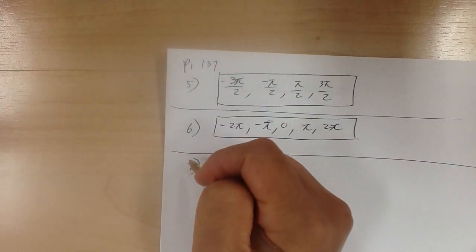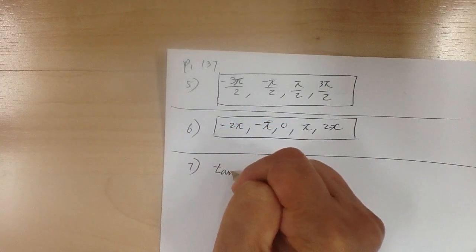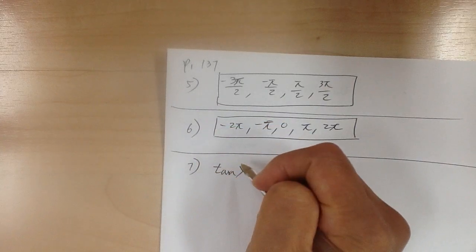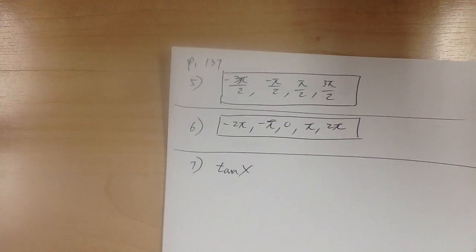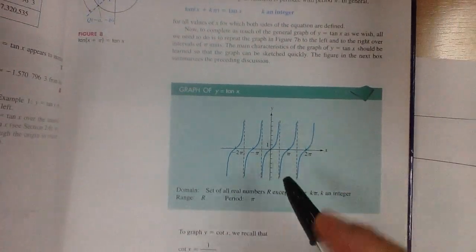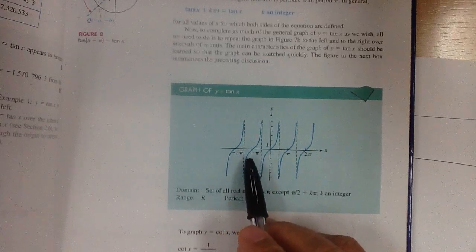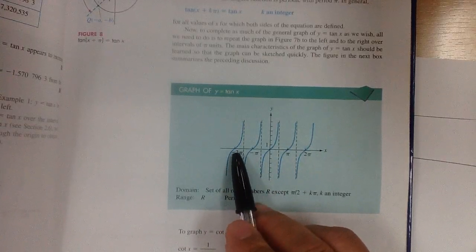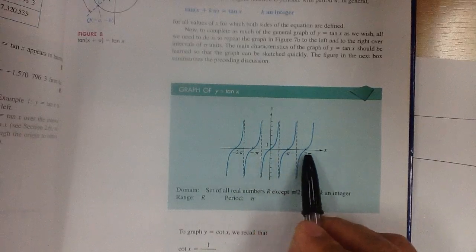For number 7, for tangent of x, you look at the tangent graph to see where it crosses over. The x-intercepts are at negative 2pi, negative pi, 0, pi, and 2pi.